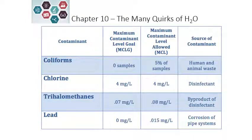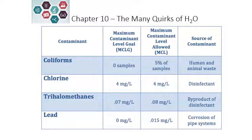There are several different contaminants that are monitored. One of those is coliforms, which is a type of bacteria that comes from human and animal waste. Although they're not really likely to cause disease, they do indicate the presence of other pathogens that could cause disease in the drinking water. The maximum contaminant level goal is to have zero samples in an area contain coliforms.